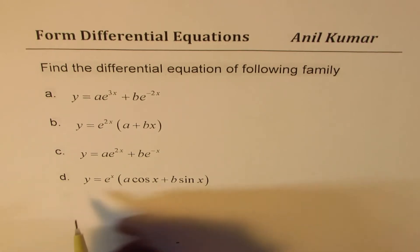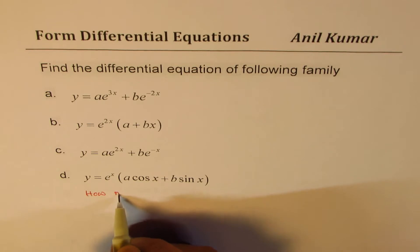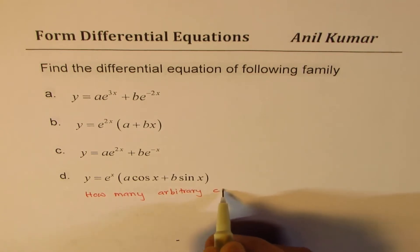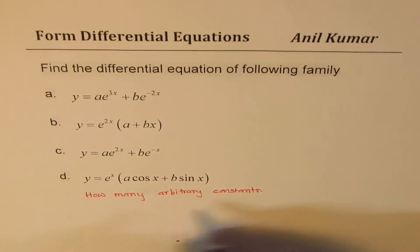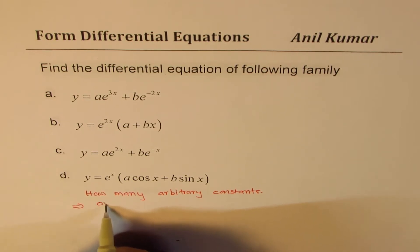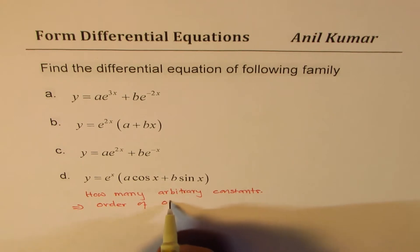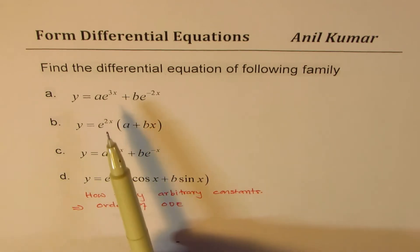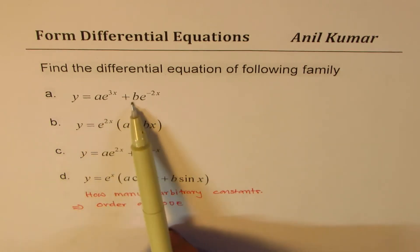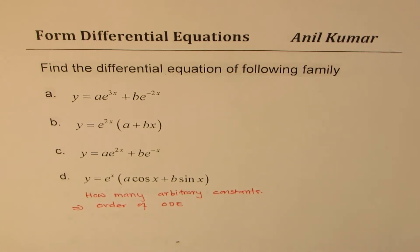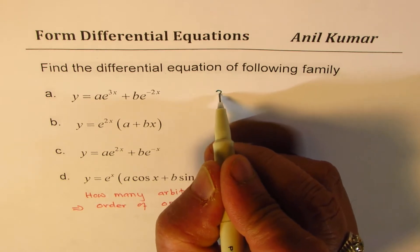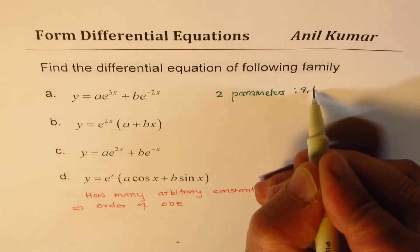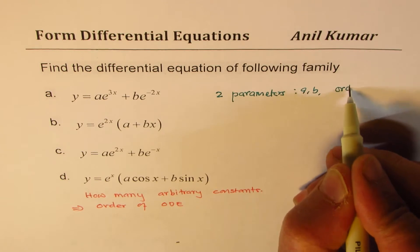First, we need to check how many arbitrary constants there are, because that will determine the order of the ordinary differential equation. In case (a), we have two parameters, a and b, so we are looking for order 2.